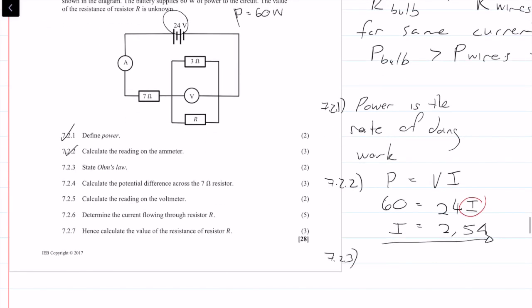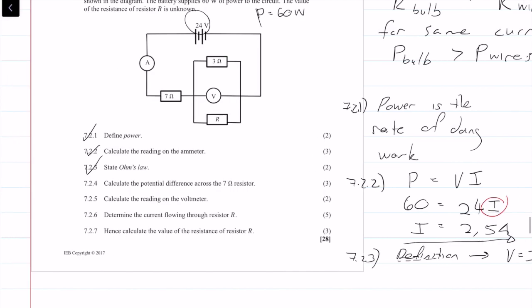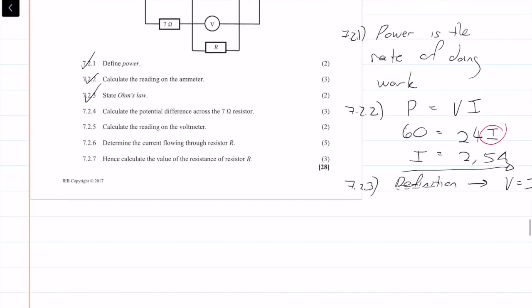Question 7.2.3: state Ohm's law. Ohm's law states that the current through a conductor is directly proportional to the potential difference across the conductor at a constant temperature. From this definition we get V equals I times R, and we get two marks.